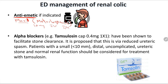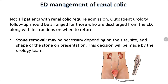Alpha blockers like tamsulosin 0.4 mg once daily have shown they facilitate stone clearance, although there is some controversy. It is proposed this works via reduced ureteric spasm, causing dilatation of the ureter. Tamsulosin is indicated for small, distal, uncomplicated ureteric stones with normal renal function — these are good candidates for tamsulosin.